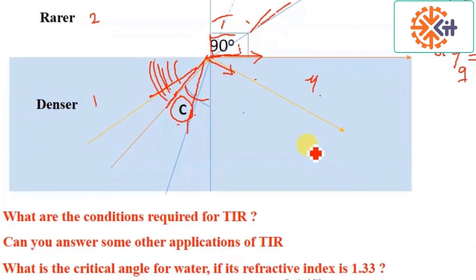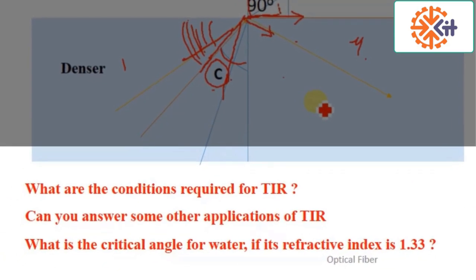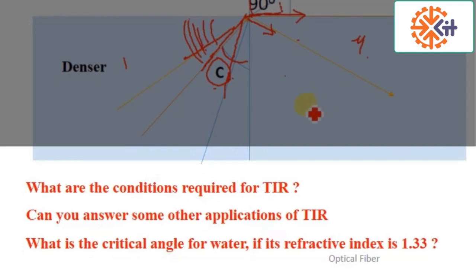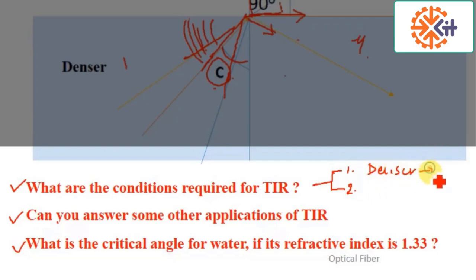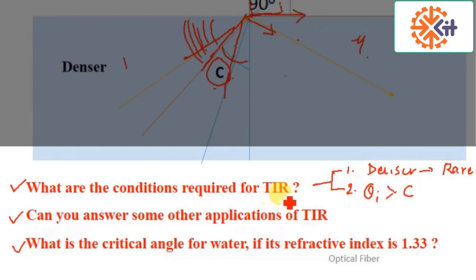Now that we know the introduction and basic principle of optical fiber, let's review. The first question is: what are the conditions required for total internal reflection? There are two important conditions. First, a ray should travel from denser to rarer medium. Second, the angle of incidence theta i must be greater than the critical angle. Only then can we get total internal reflection.